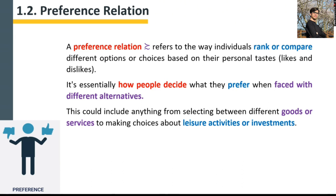When we talk about preference relation, we say binary relation. So we have to explain first what a binary relation is. A binary relation is a kind of relation where we compare different options and rank one over another, or compare one option over other options. In preference relation, this is the way individuals rank or compare different options or choices based on their personal tastes, likes, and dislikes.